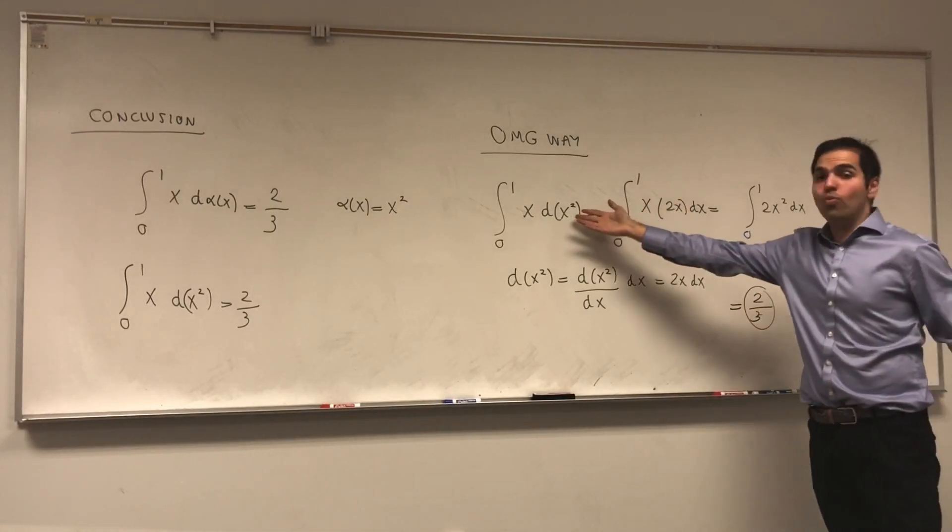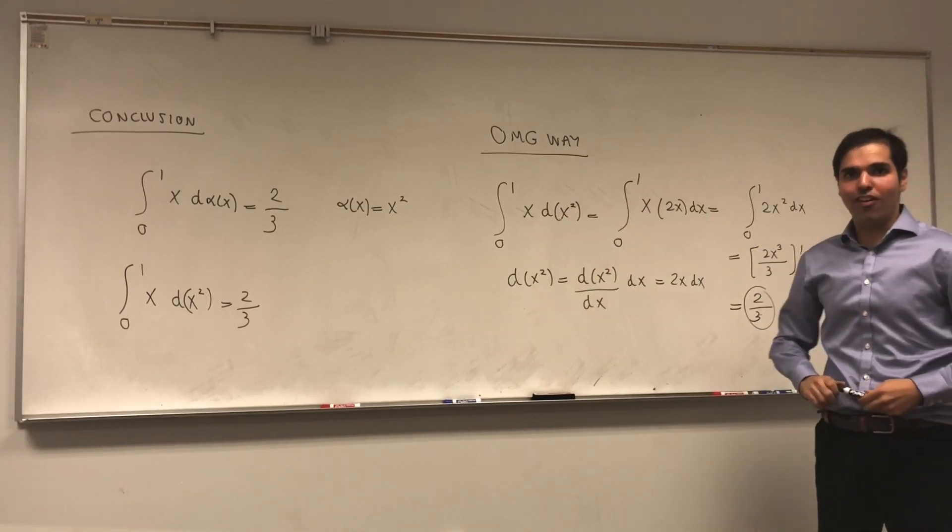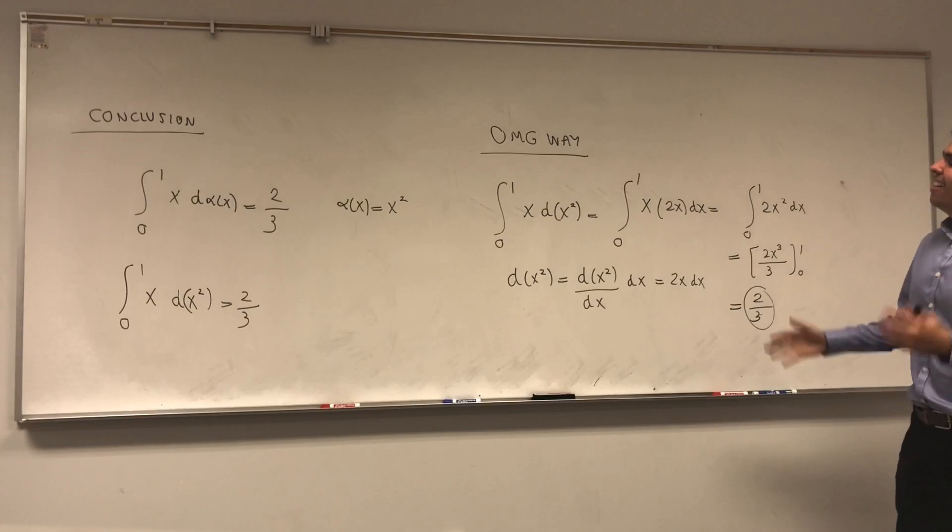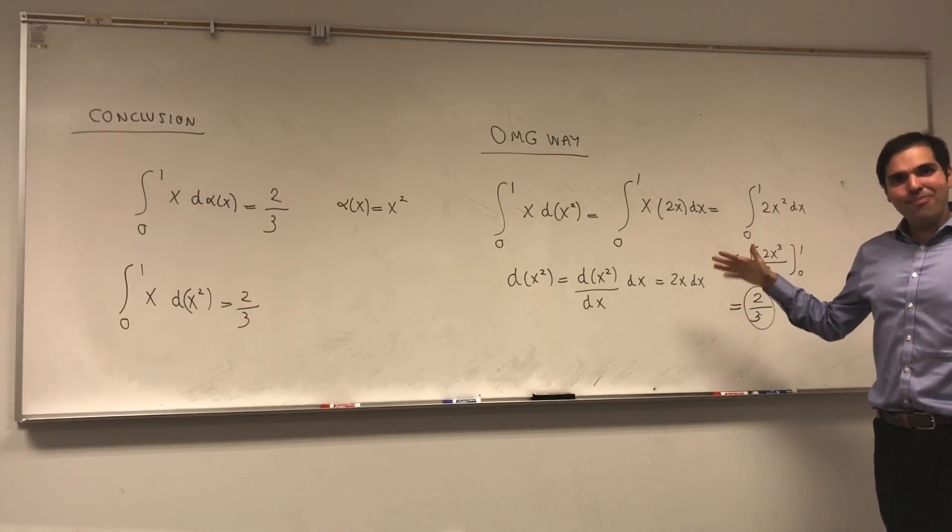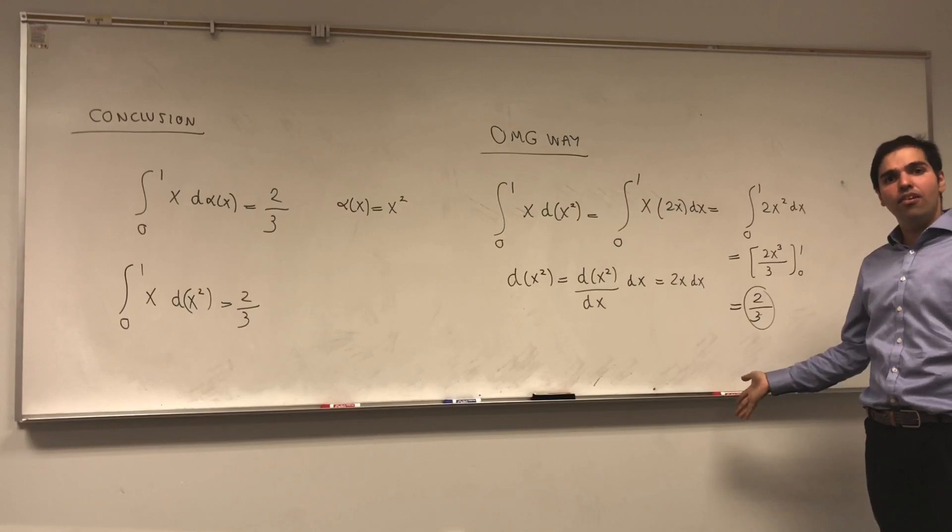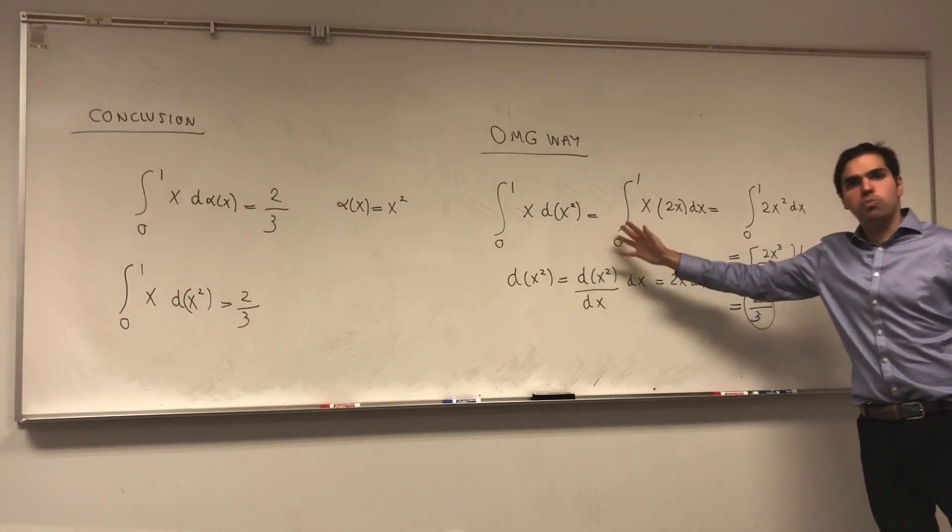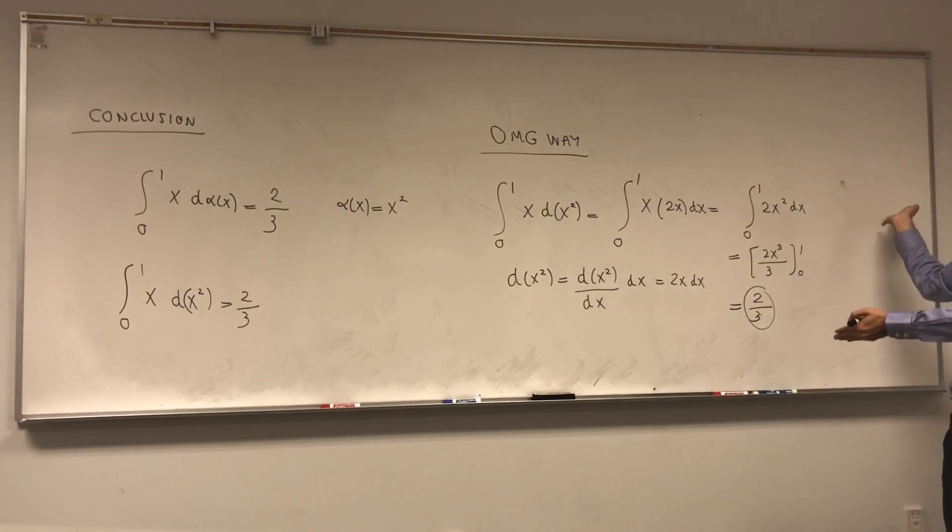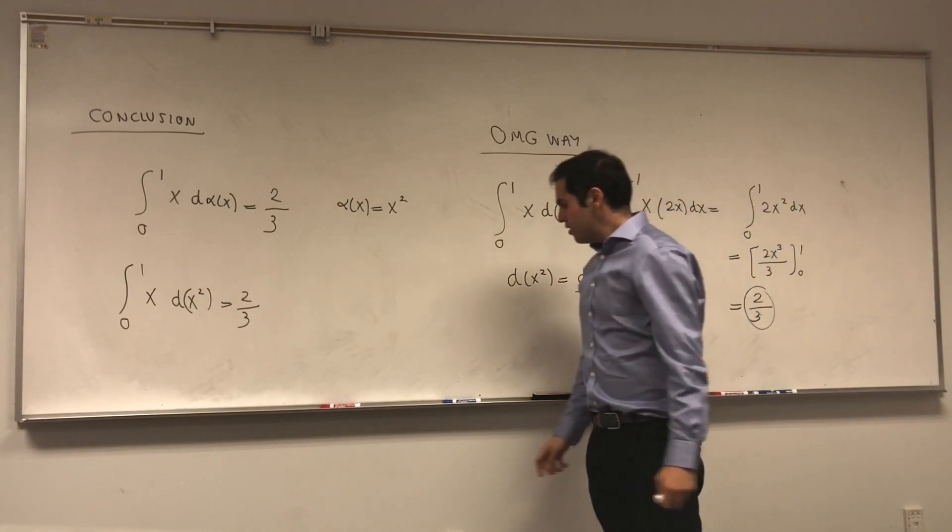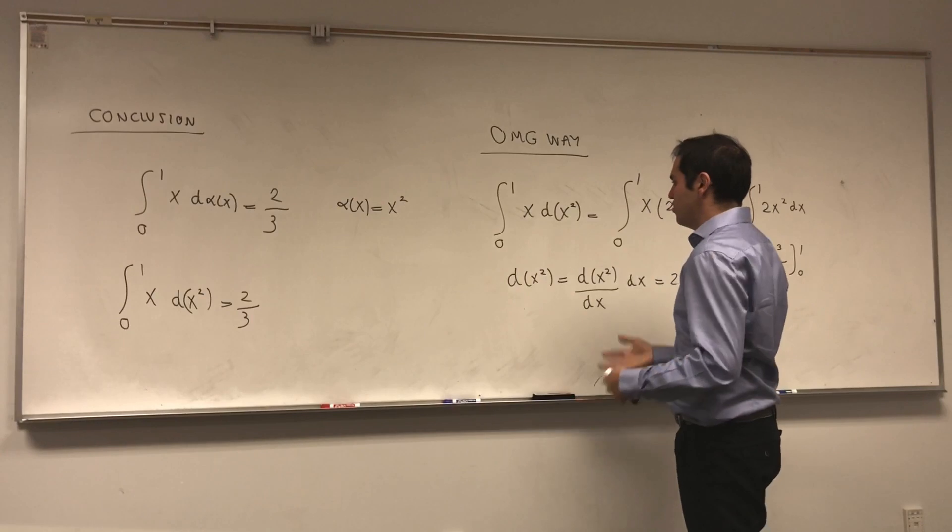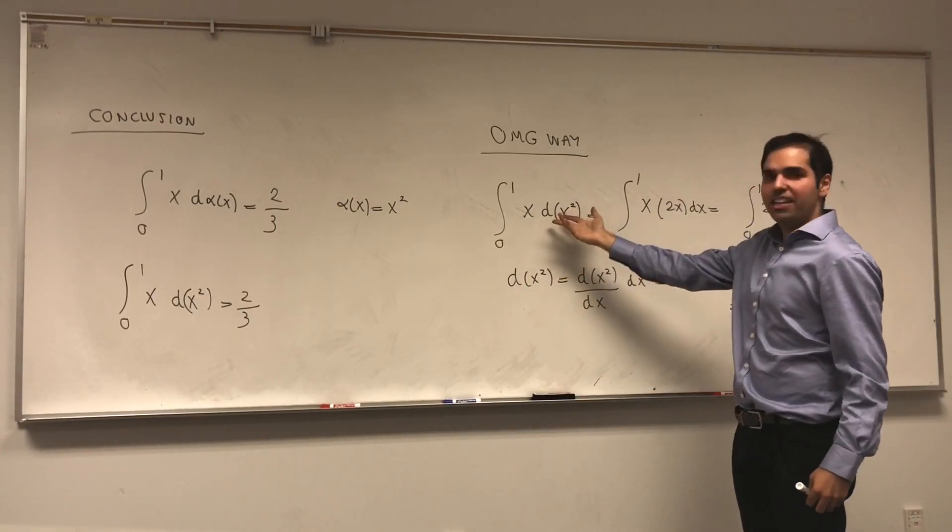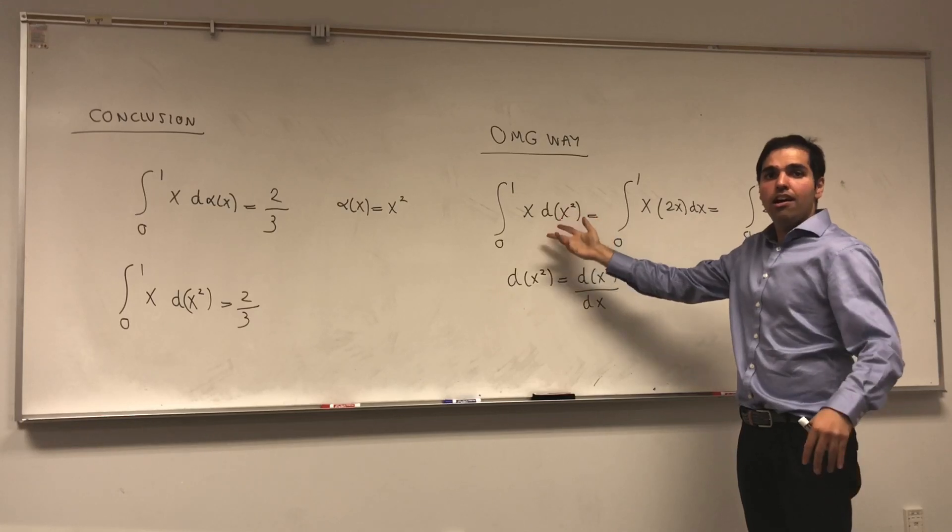And in fact, this works for any smooth function. And the thing is, why do we need the other part? Because it turns out you can still define Stieltjes integrals even if this is not smooth. And the way you do this is with the previous step.